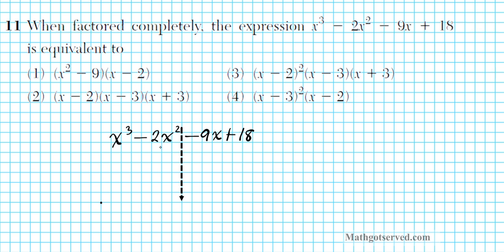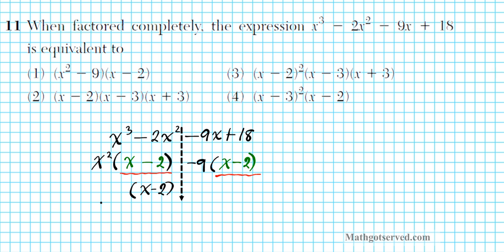From the first two, we'll pull out the GCF. The GCF of x to the third minus 2x squared is x squared. So you pull out x squared, and you are left with x minus 2. And then on the right side of our partition, we can factor out negative 9. If we factor out negative 9, that will leave us with x minus 2. Notice when you factor out a negative from a positive, it becomes negative — x minus 2. Now you notice that these two quantities are identical, so since they're common factors, we can factor it out: x minus 2, and we'll be left with x squared minus 9. Whatever is left on the outside, you bring it together into its own parenthesis.